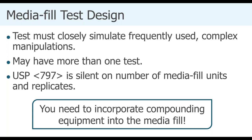Regarding horizontal versus vertical flow: if staff compound in both, you may need to test in both—check with your state, as this is sometimes a state-designated requirement. Otherwise, identify the more difficult process. Since competencies are done twice yearly, you might have staff do horizontal flow the first time and vertical flow at the next six-month interval.